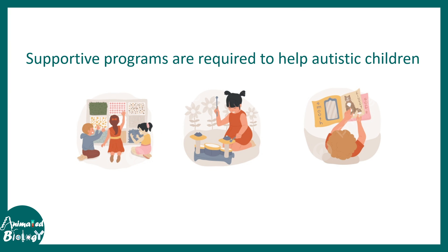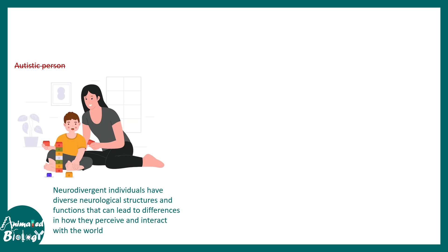Autism doesn't have a cure because the behavioral outcomes are so diverse that tailoring a customized program is very difficult, but supportive programs are required to help autistic children. It is also a misnomer to simply call these people autistic. A neurotypical person behaves like others, while autistic children are neurodivergent — people with neurological structures and functions that lead to differences in how they perceive the world. They are not abnormal or stupid; they are just different and perceive the world differently.